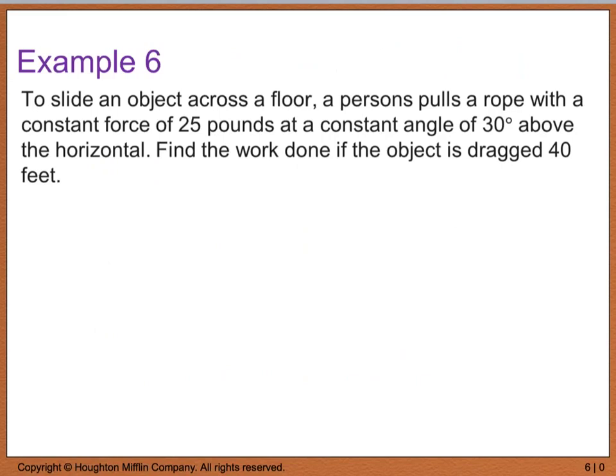So, example six says, to slide an object across the floor, a person pulls on a rope with a constant force of 25 pounds at a constant angle of 30 degrees above the horizontal. We want to find the work done if the object is dragged 40 feet.